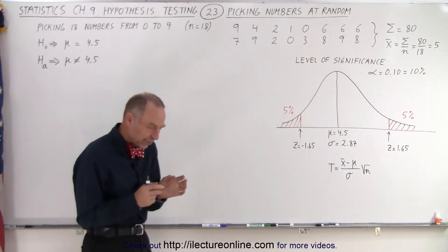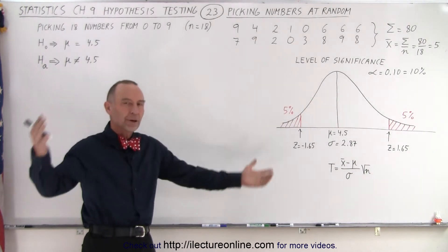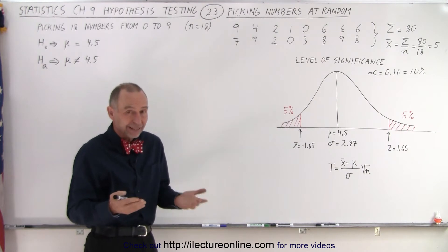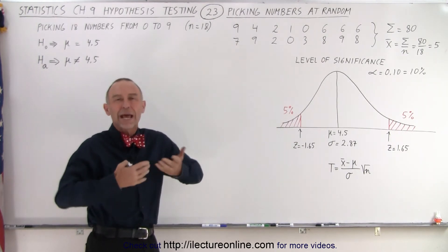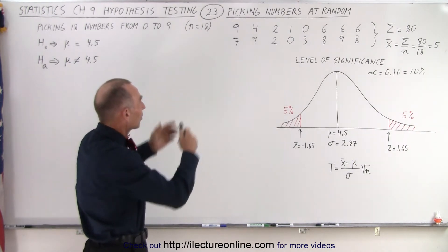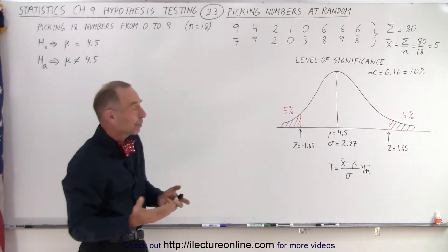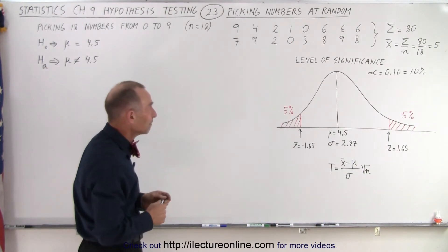So the idea is that if we pick a smaller subset, a sample of all the possible numbers we can pick from zero to nine, let's say we pick 18 of them, we have a means of randomly picking 18 numbers, then it might end up with something like this. So here we have an example of what might happen if you pick 18 numbers at random from zero to nine.